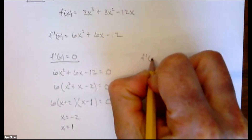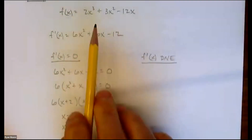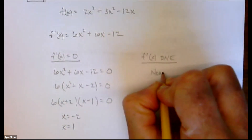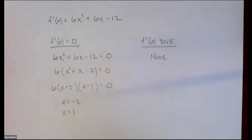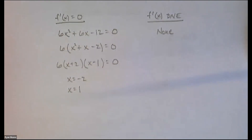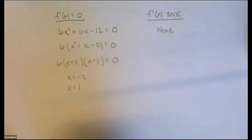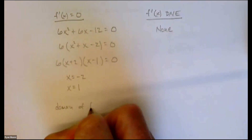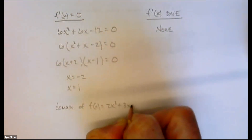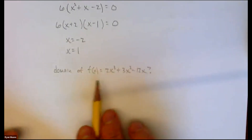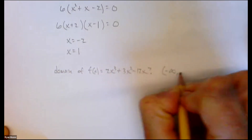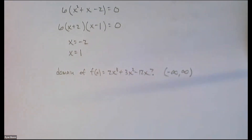Next, we mark these critical numbers on a domain line. The domain of 2x³ + 3x² − 12x is all real numbers since it's a polynomial. On the domain line we place −2 and 1 in order, which divides the domain into three intervals: (−∞, −2), (−2, 1), and (1, ∞).